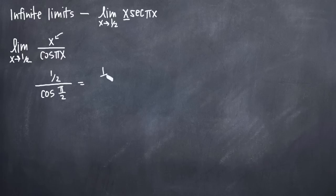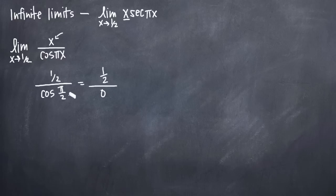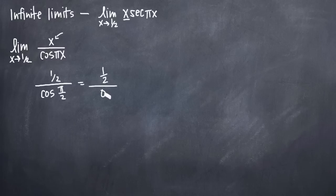Cosine of pi over two, as you may know from the unit circle or your calculator, is equal to zero. We can't have zero in the denominator, so we're not going to be able to use the substitution method to solve for the limit. But what we have confirmed is that we have a vertical asymptote at x equals one-half. Because we're dividing by zero, the function is undefined at that point, which means we're going to have an infinite limit — either positive infinity or negative infinity, and possibly one-sided limits.